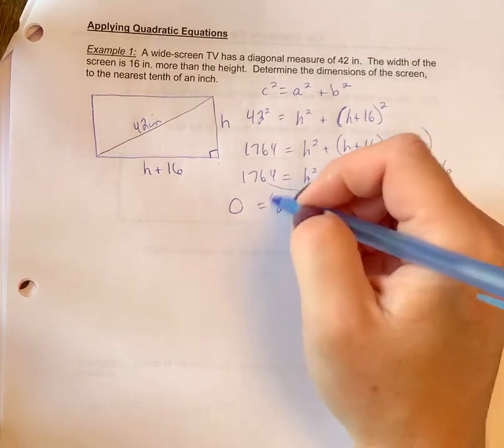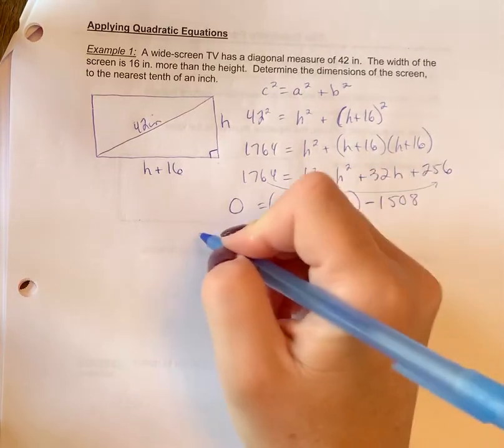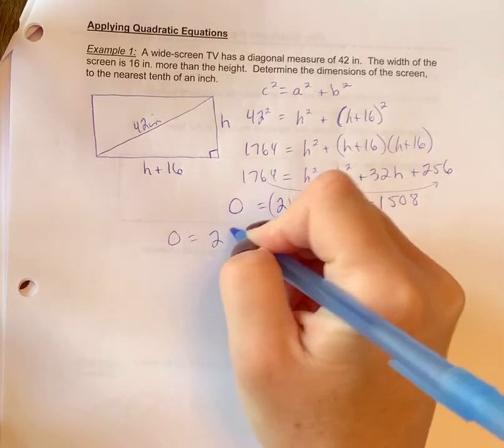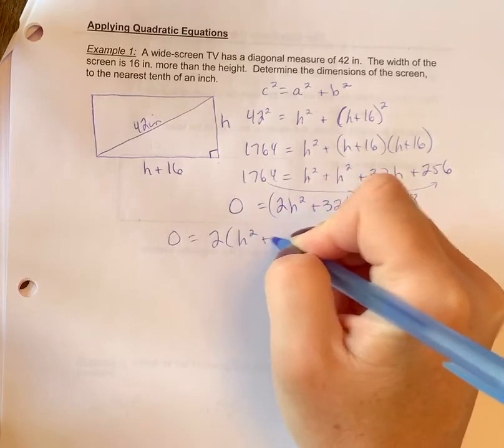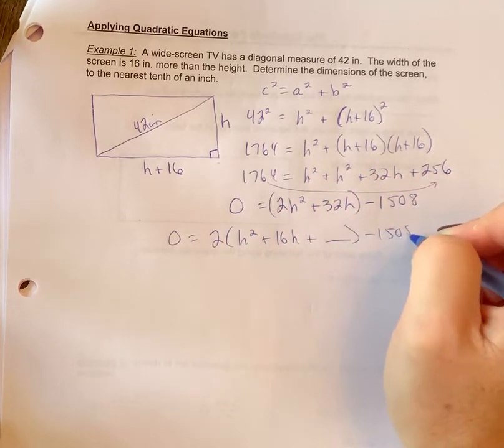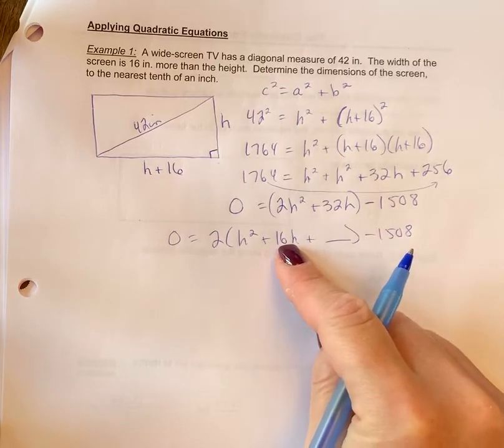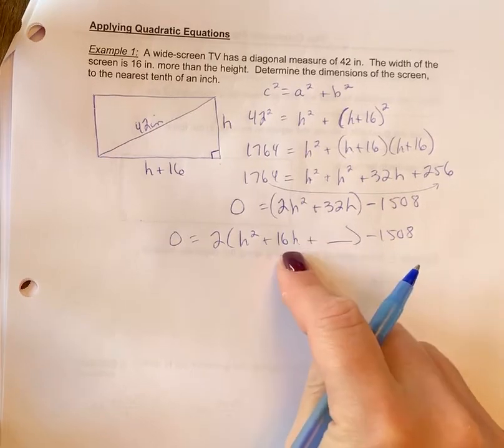Okay, now I'm going to group these two terms together, and zero will equal 2h squared plus 16h plus blank minus 1508. In the brackets here, we have a nice even number, so even though it's larger numbers, you've got your calculator, it's going to be a little easier. We don't have a fraction here.